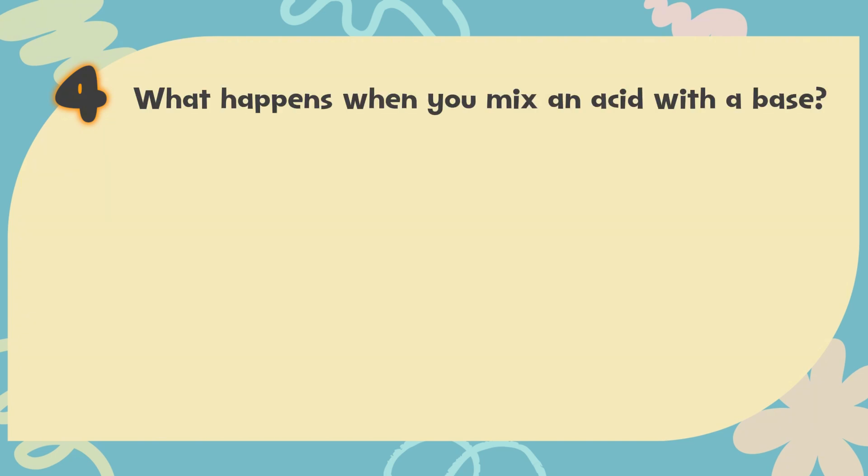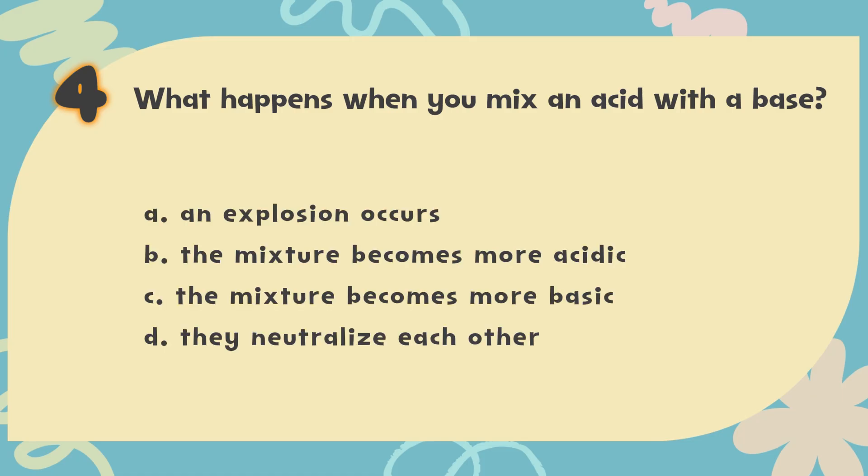Number 4. What happens when you mix an acid with a base? The choices are: A. An explosion occurs. B. The mixture becomes more acidic. C. The mixture becomes more basic. D. They neutralize each other.